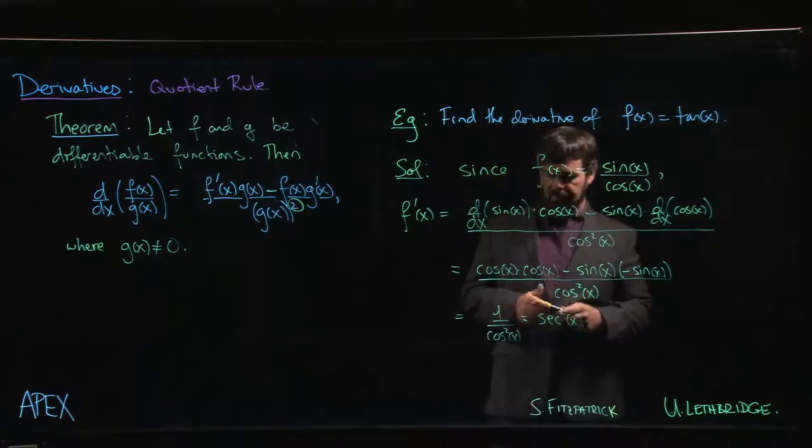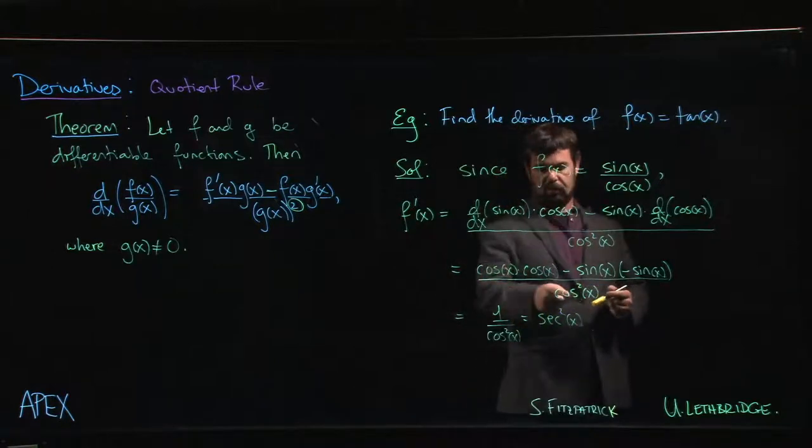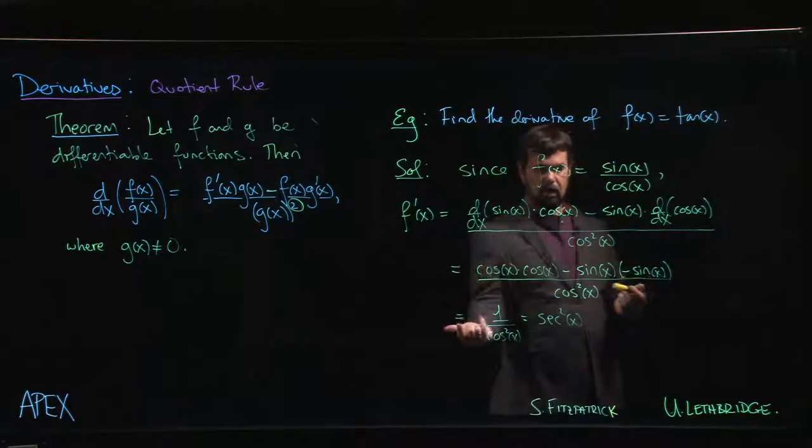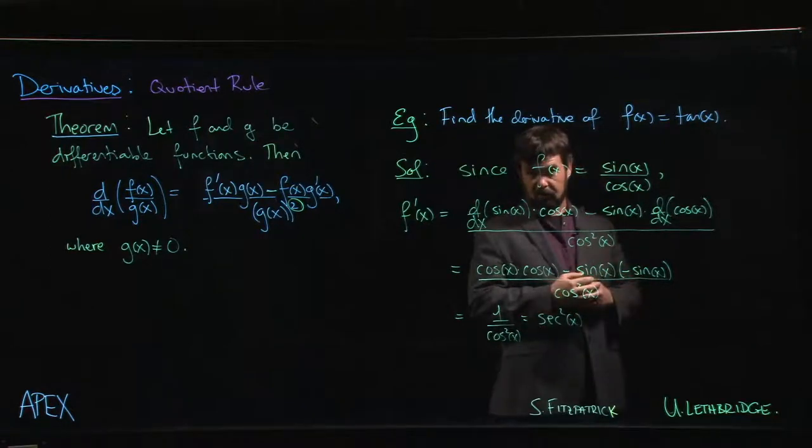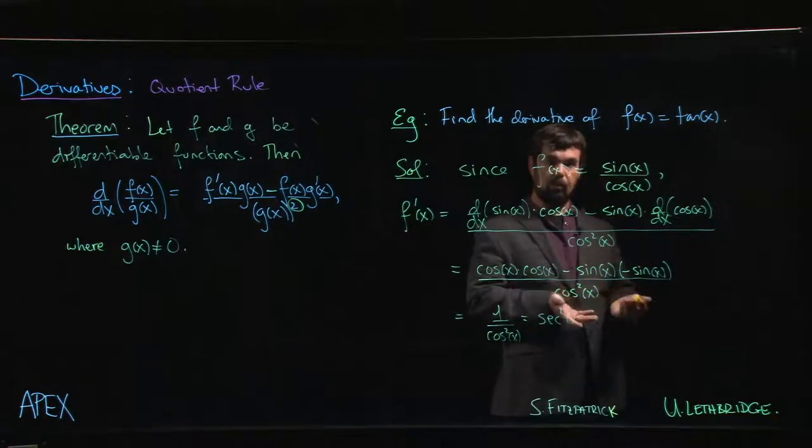Of course, the other thing you might notice is you could have also divided term by term. Cos squared over cos squared gives you 1. Sine squared over cos squared gives you tan squared.